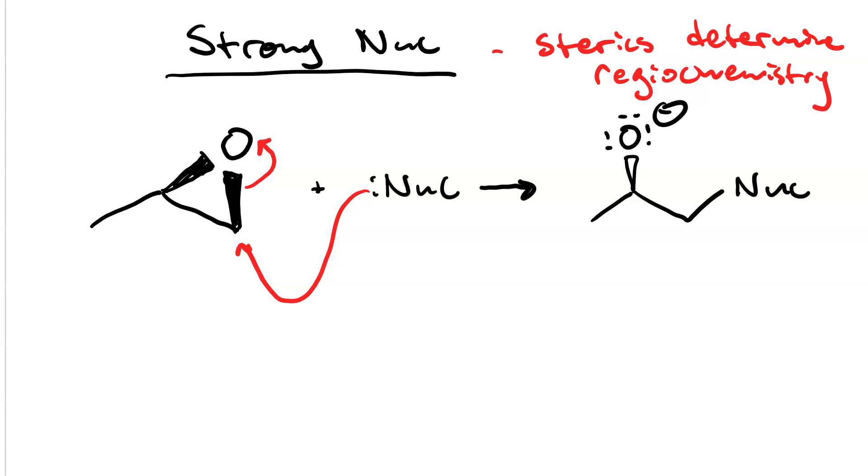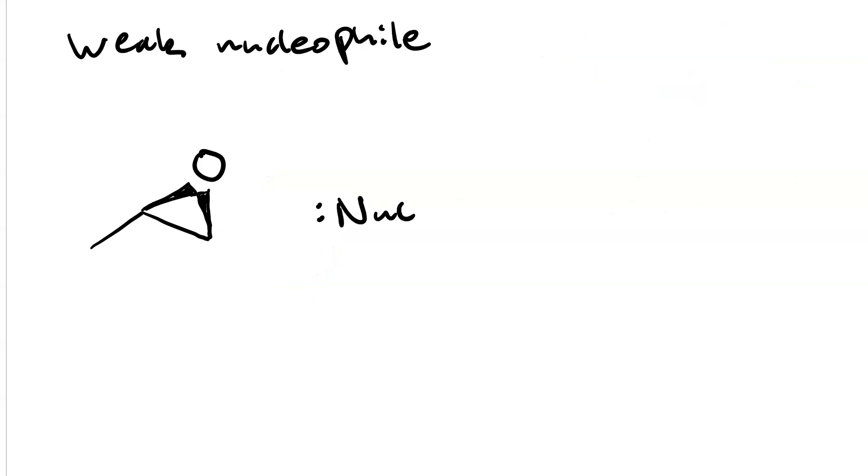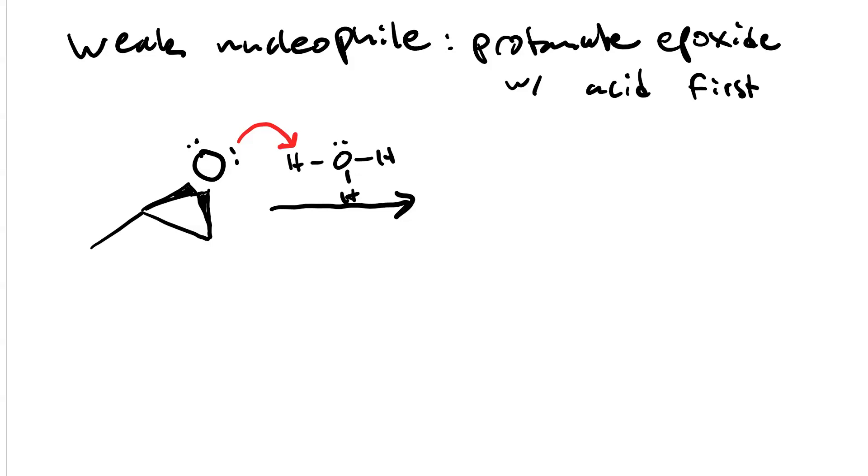When you have a weak nucleophile, it's not strong enough to cause the ring to open, so you need acidic conditions to protonate it first. We get a proton transfer reaction which protonates the epoxide, and now we have a good leaving group, so a weak nucleophile is capable of causing the ring to open. We should also note that we created a water molecule here.